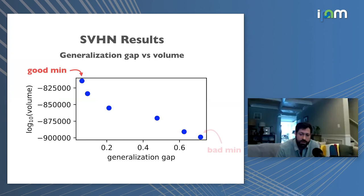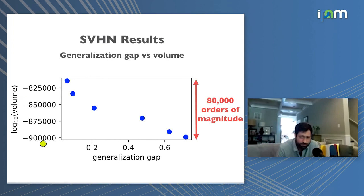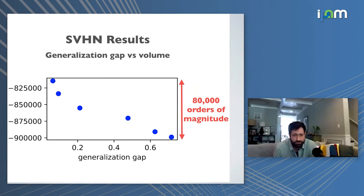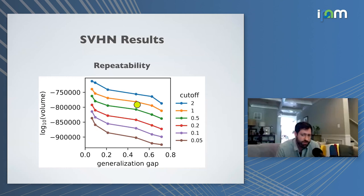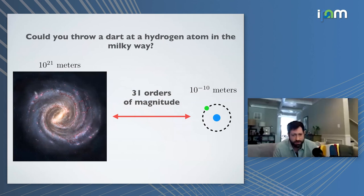The y-axis is the log₁₀ of volume, and the volume disparity is 80,000 orders of magnitude. These results reproduce with different loss cutoffs — lower cutoffs give smaller volumes but the same pattern — and are averaged over 10 runs at every poisoning level. On the Swiss roll with a smaller network the pattern is noisier but the same behavior holds. For a fun comparison: finding a specific hydrogen atom by throwing a dart randomly at the Milky Way requires roughly 10^62 darts — but finding a bad minimum in this loss landscape is 80,000 orders of magnitude harder than that.